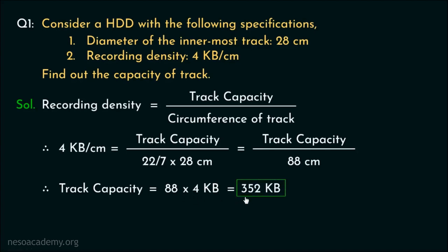So in this particular hard disk, all the tracks can store 352 KB of data. Pretty straightforward, right? Now let's move on to the next question.